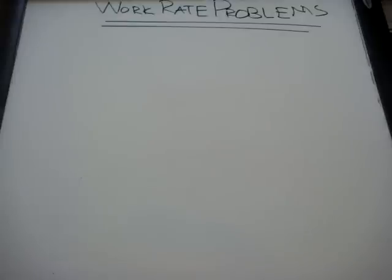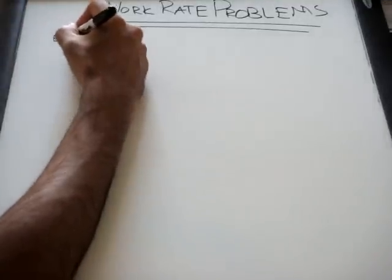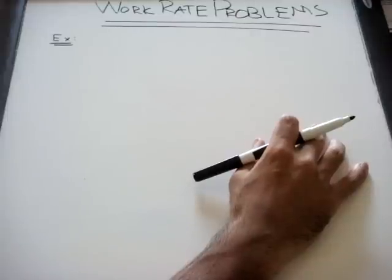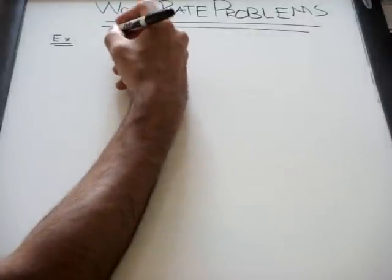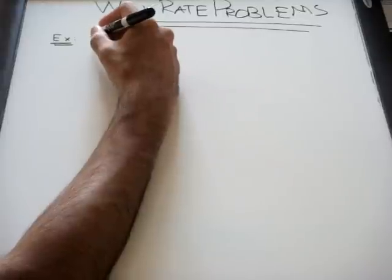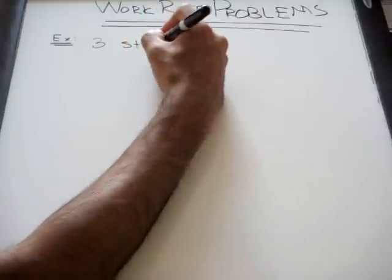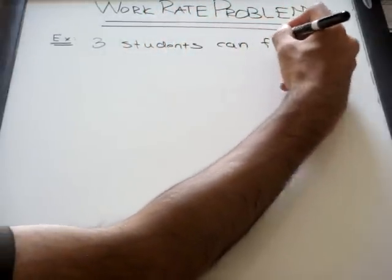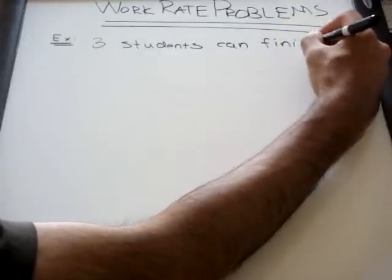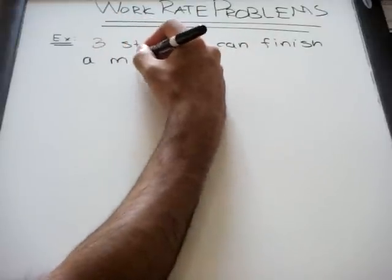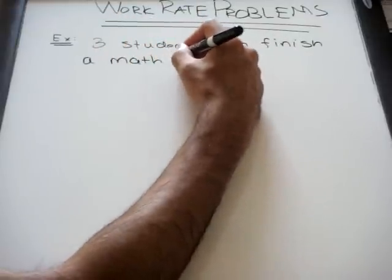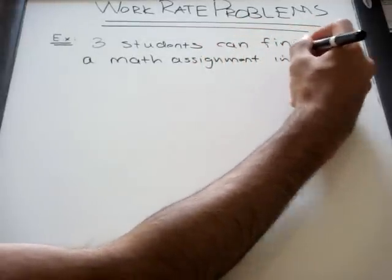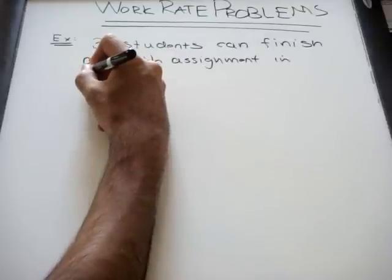The first problem, let's look at an example here of what we call a work rate problem. Let's just say that three students can finish a math assignment in three hours.